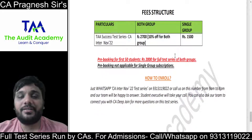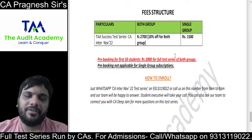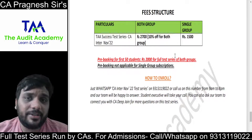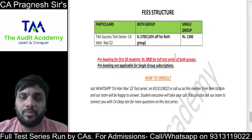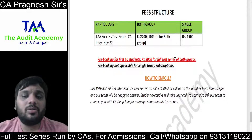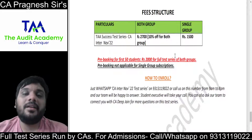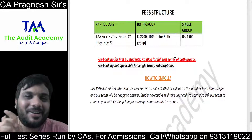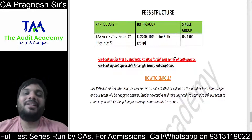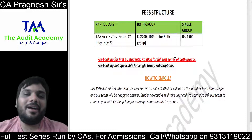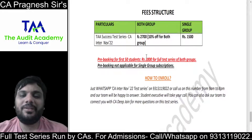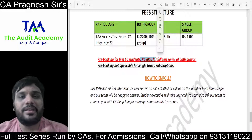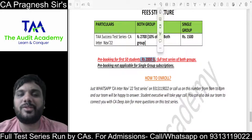Now for the fees structure: ₹1500 for a single group. If you take both groups and all papers, it is ₹2700. But here is big news — if you are among the first 50 students to enroll, you will get the entire full test series at just ₹2000. So enroll now before the first 50 spots are gone.